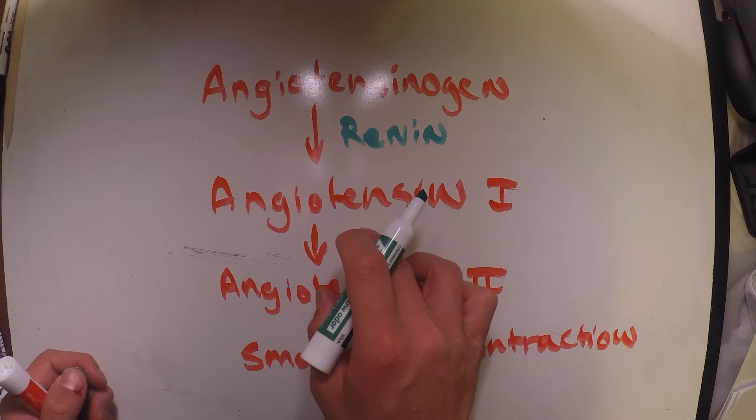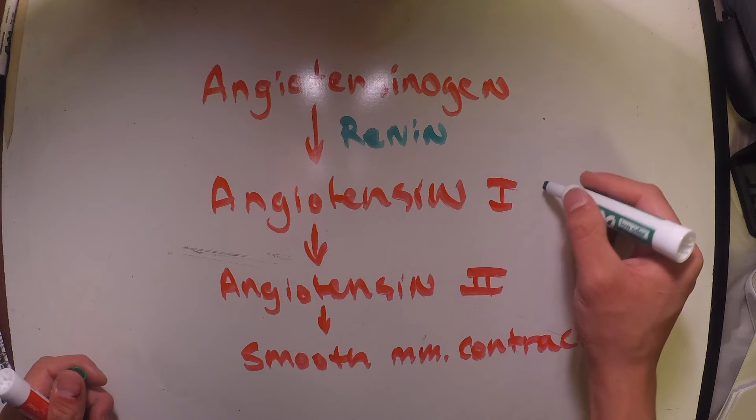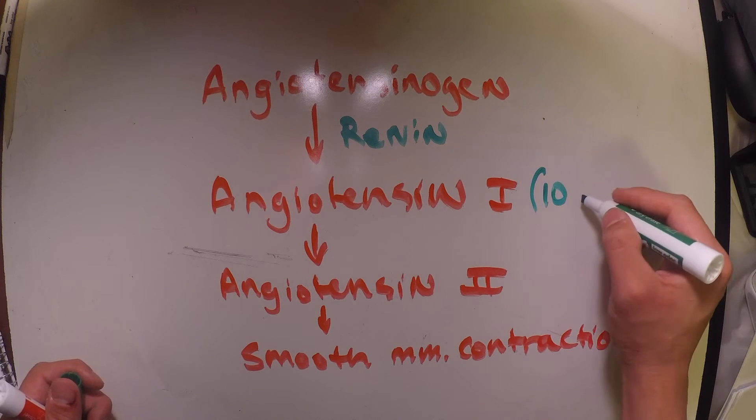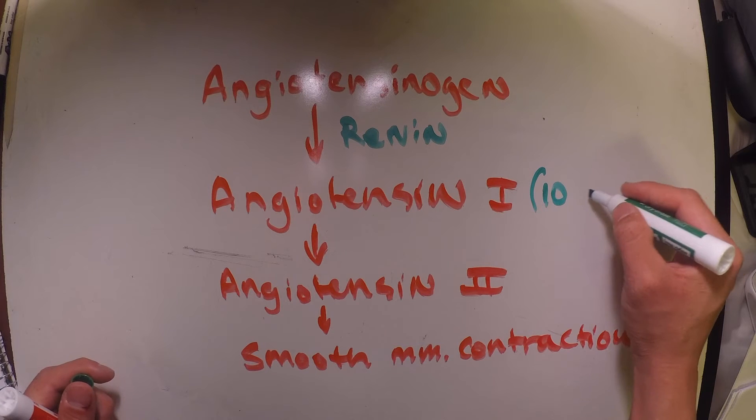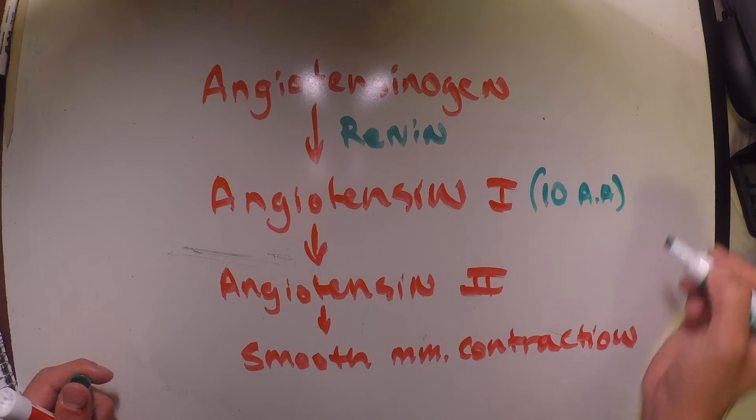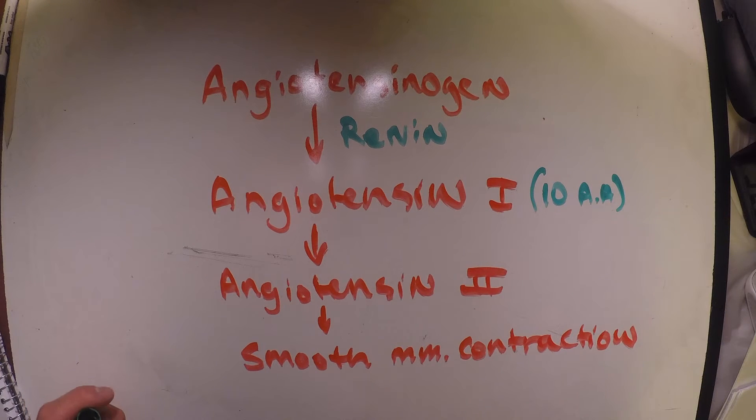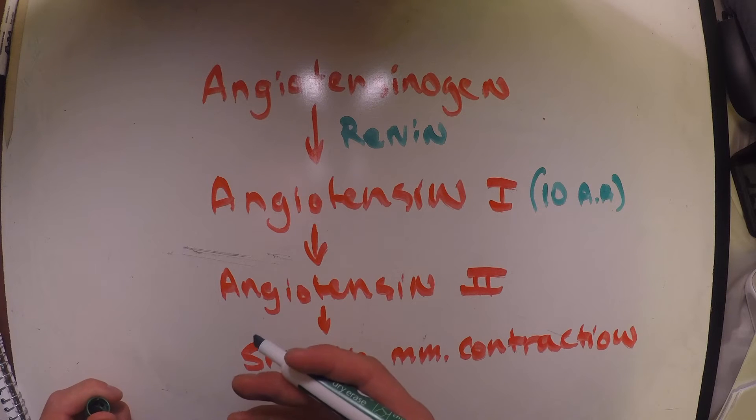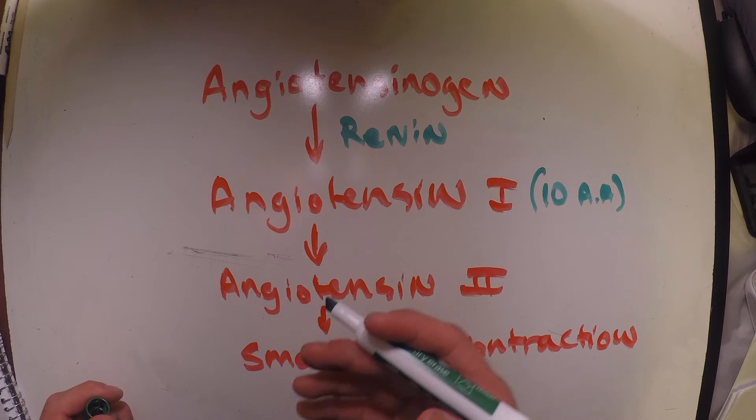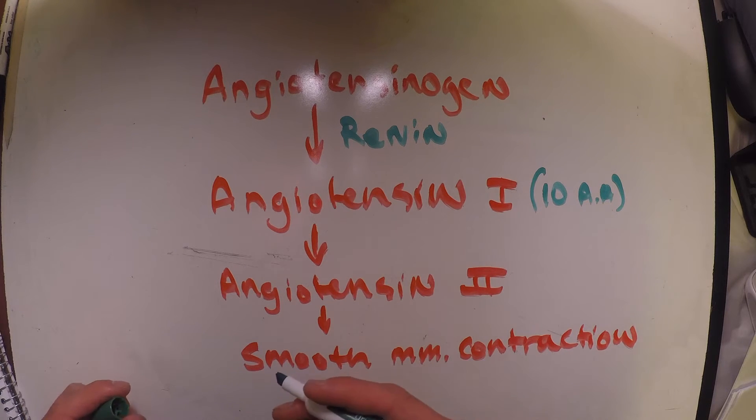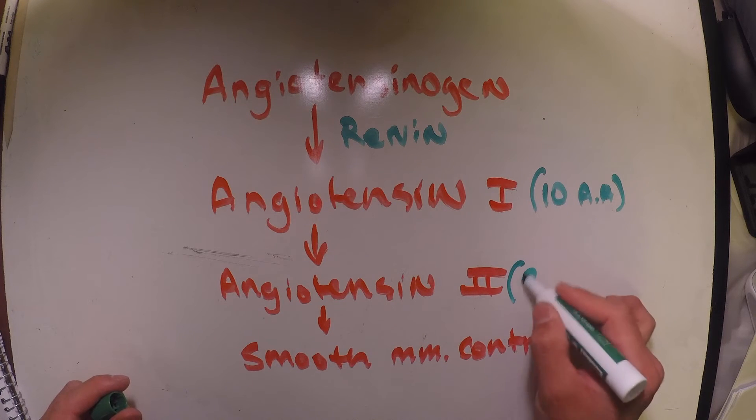That peptide is going to be known as angiotensin 1. Angiotensin 1 is going to be 10 amino acids long. Now this angiotensin 1 is then going to be inactive, so we need to activate this angiotensin. In doing so, we're going to release this protease, and this protease is going to convert angiotensin 1 into an 8 amino acid known as angiotensin 2.